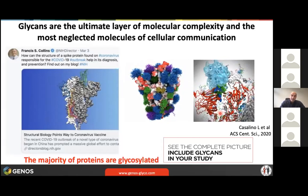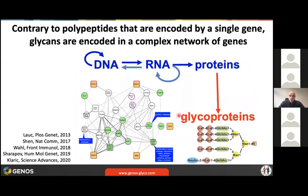Something which is peculiar with glycans is they do not have a genetic template. While every protein is directly encoded in DNA, so just by reading the gene we can know the structure of a protein, glycans are encoded in a complex network of numerous genes which interact both among themselves and with the environment to determine the final structure of a glycan attached to a specific site on a specific protein.